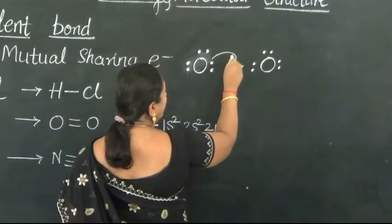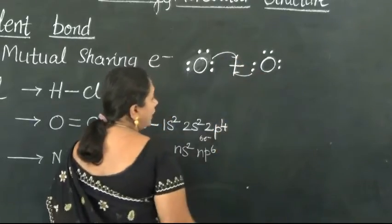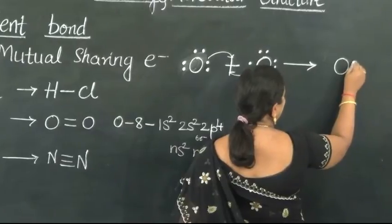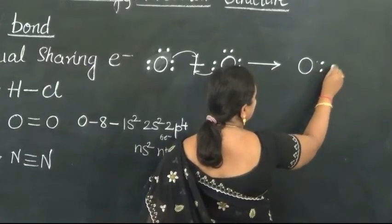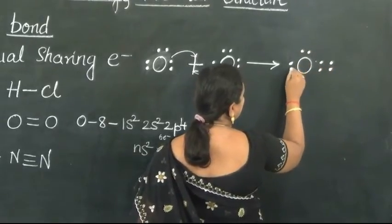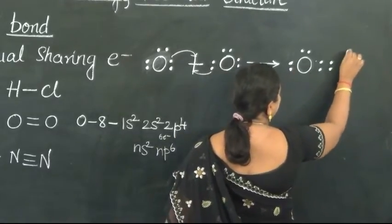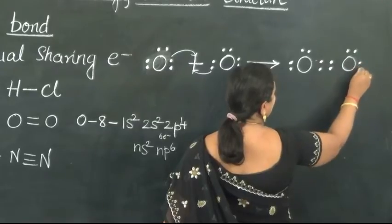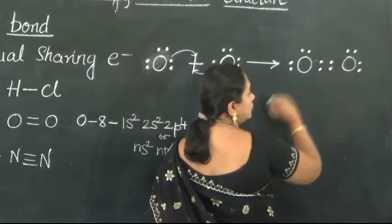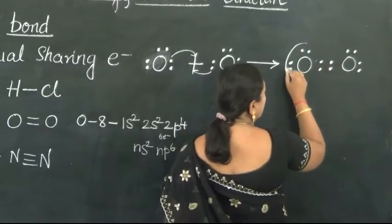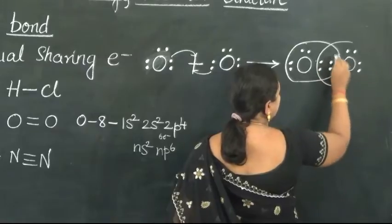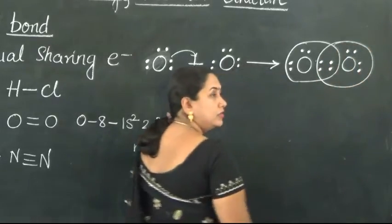Now they both donate electrons to a common pool. These 2 are the electrons of one Oxygen atom and these 2 are the electrons of the other Oxygen atom. The donated electrons would be shared among the participating Oxygen atoms equally.